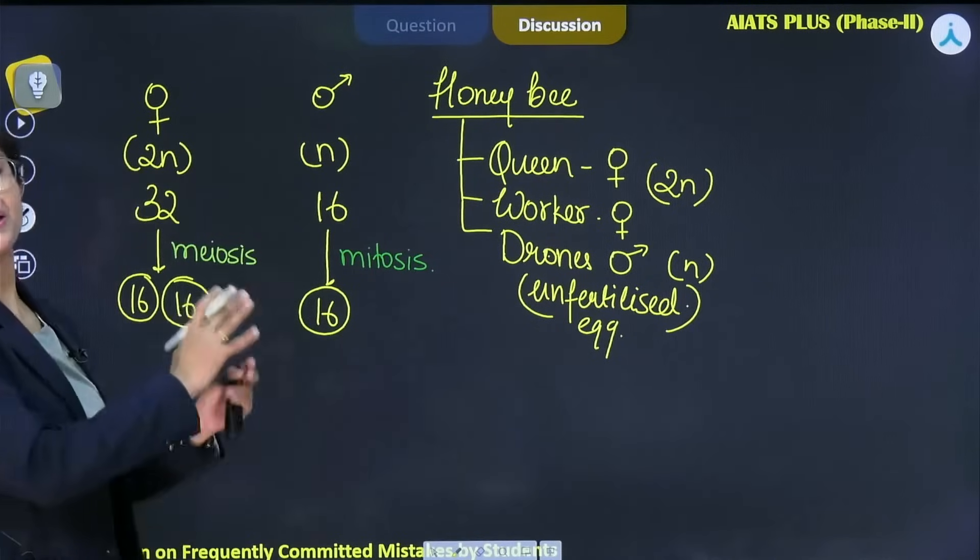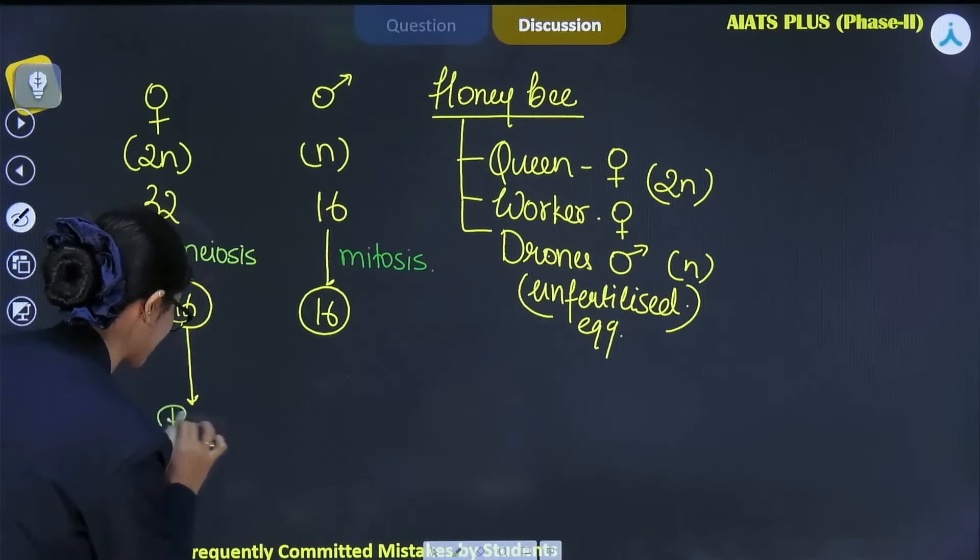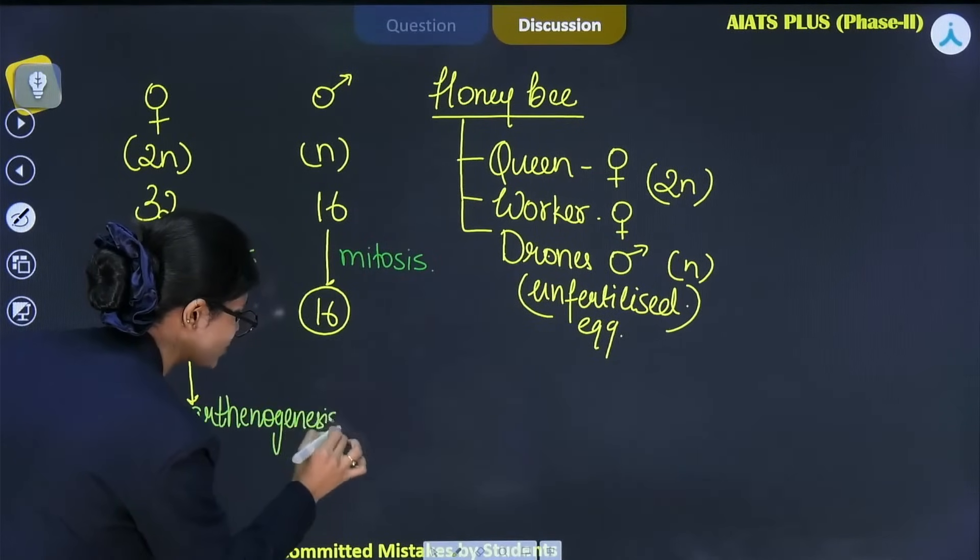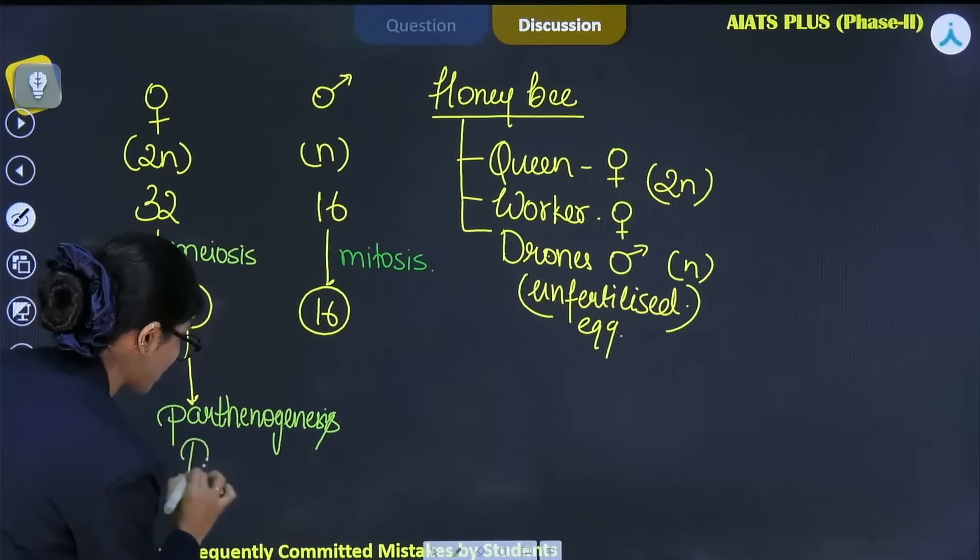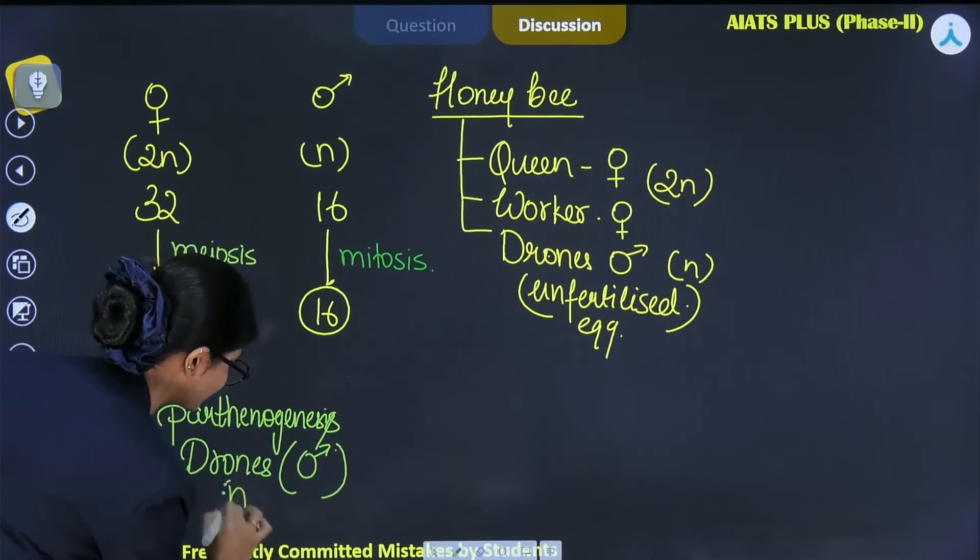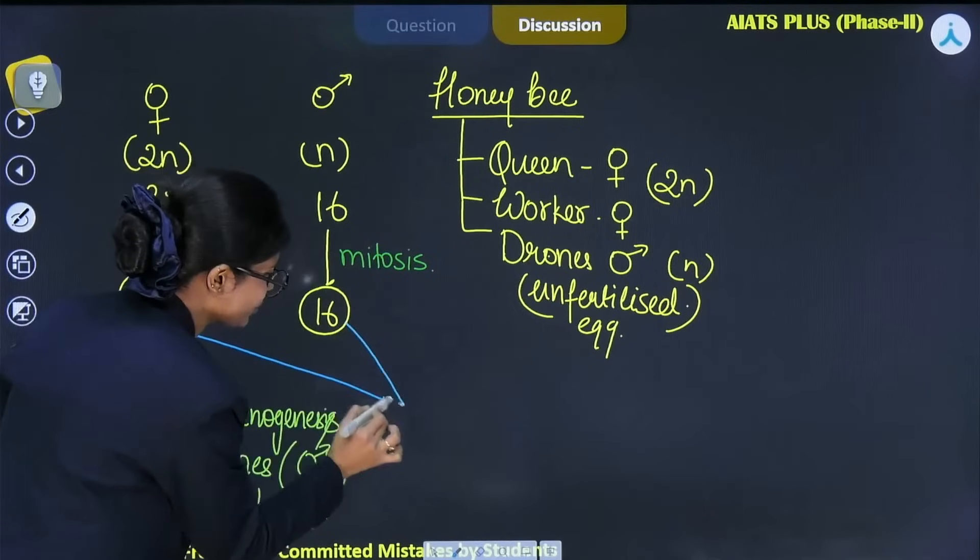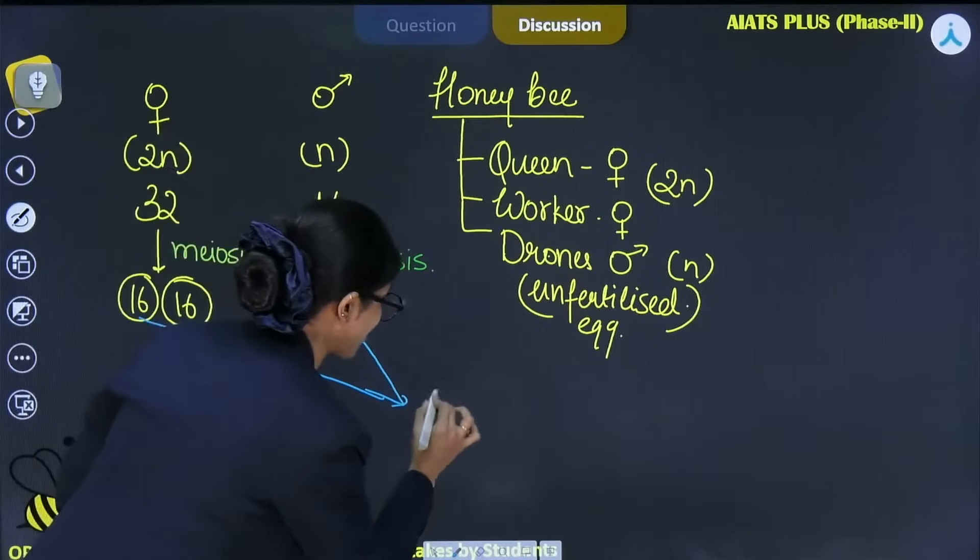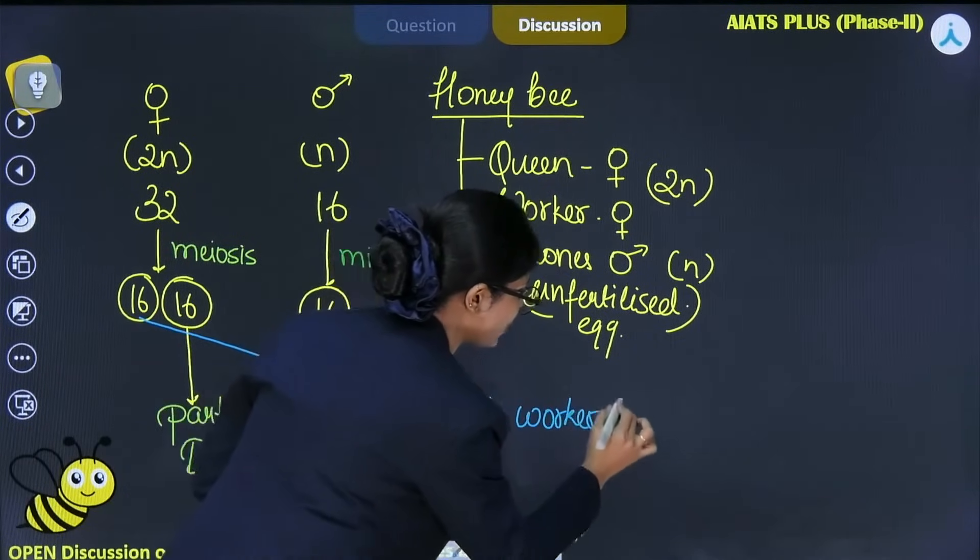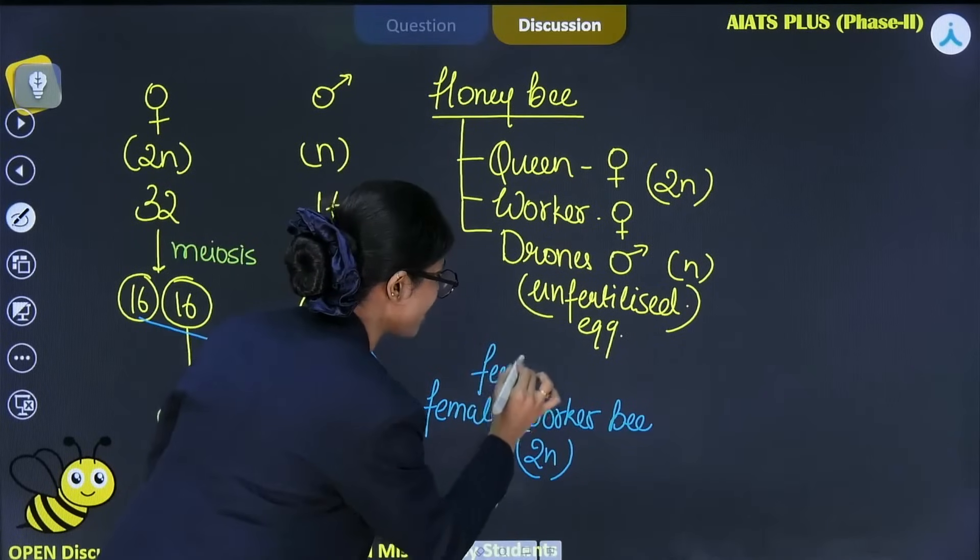If this egg remains unfertilized or we can say by the process of parthenogenesis, by the process of parthenogenesis, that means no fusion of male or female gametes, then there will be formation of drones or we can say males which are haploid. And if there is process of fusion or we can say the fertilization will take place, then there will be production of female worker bees which are diploid in nature. These are diploid in nature and they are result of fertilization.